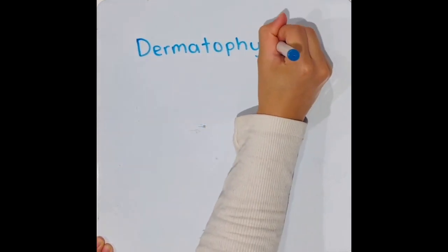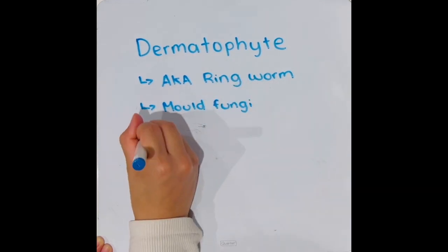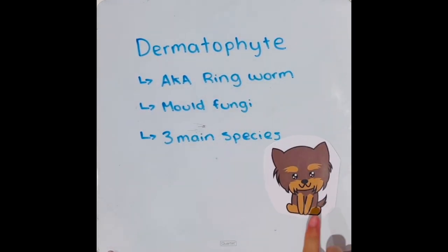Dermatophyte is a mold fungi, more commonly known as ringworm. There are three main species of Dermatophytes in small animals, where contraction of the disease depends on the species.